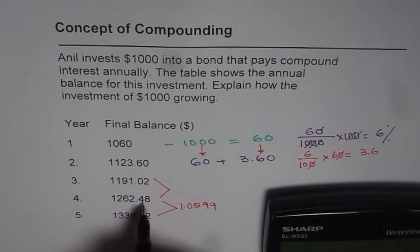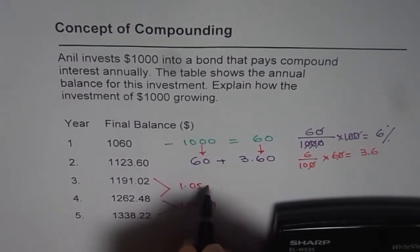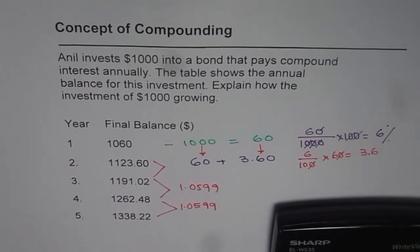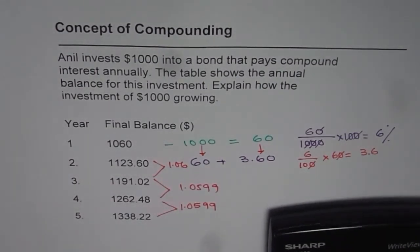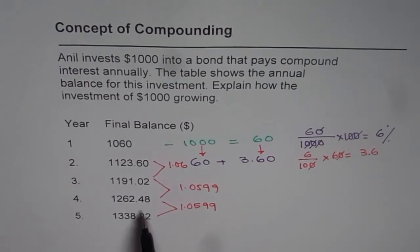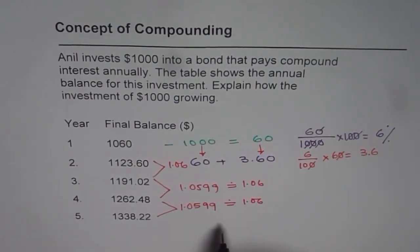Now let's divide 1262.48 by 1191.02 — that also gives us 1.0599. Let's do it once more: 1191.02 divided by 1123.60 gives 1.06. So when we divide the consecutive terms we consistently get a factor of approximately 1.06, which means our investment is getting multiplied by a factor of 1.06 each year.